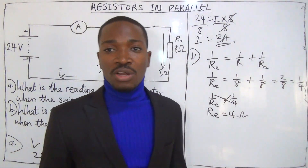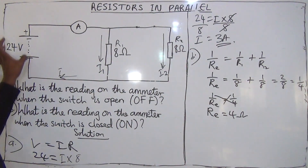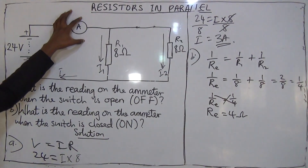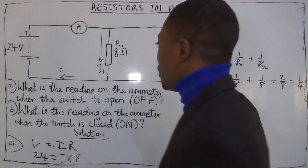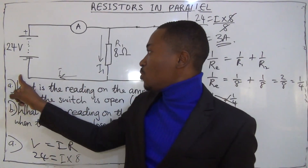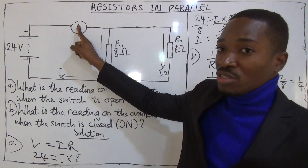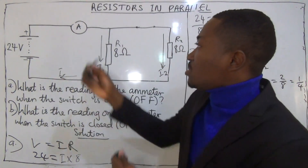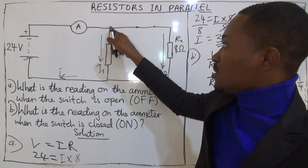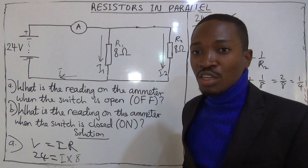Now we can calculate the current flowing in the circuit. The current I flows through the cell and through the ammeter — that is what the ammeter will read. It is this total current I that then splits into I1 and I2.